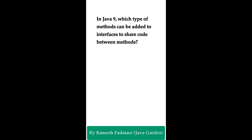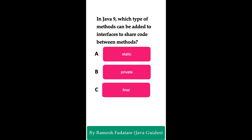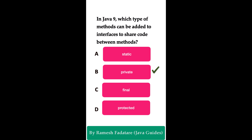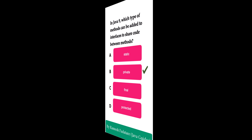In Java 9, which type of methods can be added to interfaces to share code between methods? Option A: static methods. Option B: private methods. Option C: final methods. Option D: protected. The correct answer is private methods. Starting from Java 9, interfaces can have private methods, which help share code between methods without exposing them to external classes. Java 8 onwards allows static and default methods in interfaces; Java 9 onwards also allows private methods, which can be called within default methods of the interface.